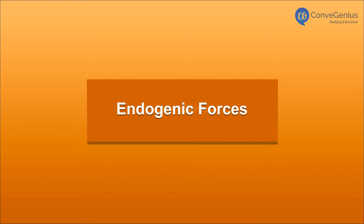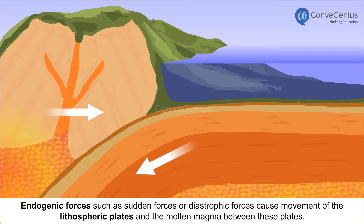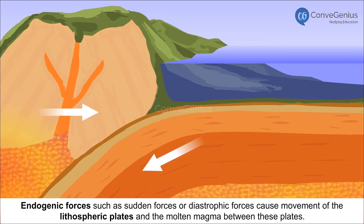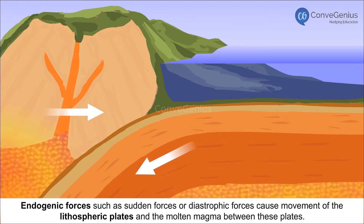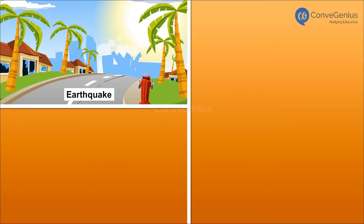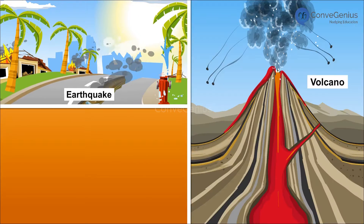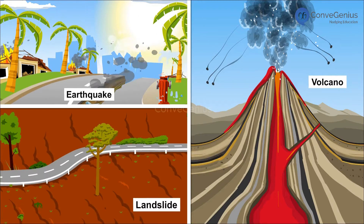Endogenic forces, such as sudden forces or diastrophic forces, cause movement of the lithospheric plates and the molten magma between these plates. This results in movements such as earthquakes, volcanoes, and landslides.